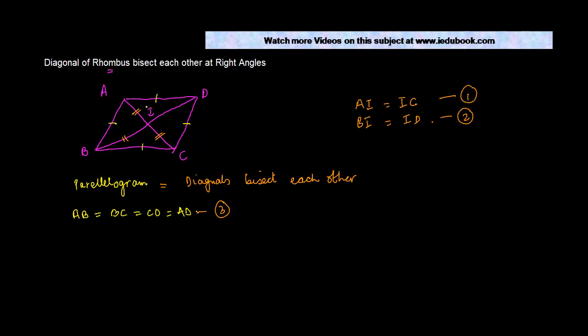Now, what I need to prove is that the diagonals of a rhombus bisect each other at right angles. Meaning that, let us say, for example, you have this angle and this angle, both these angles will be equal to 90 degree.